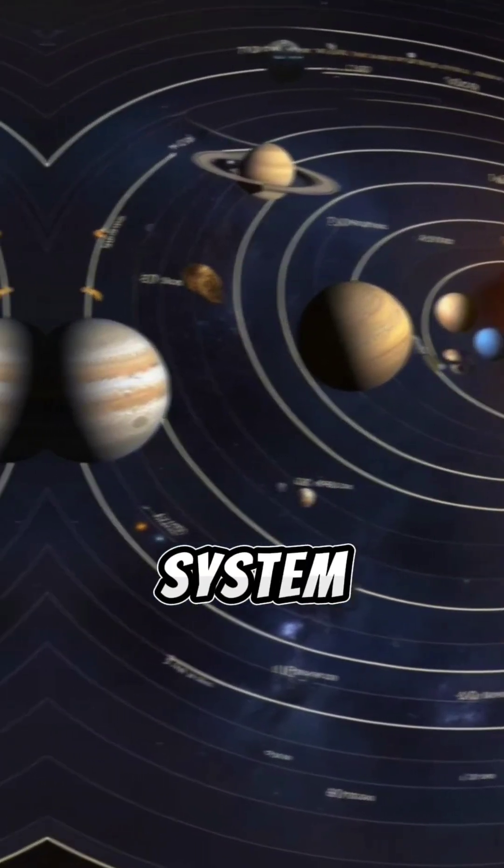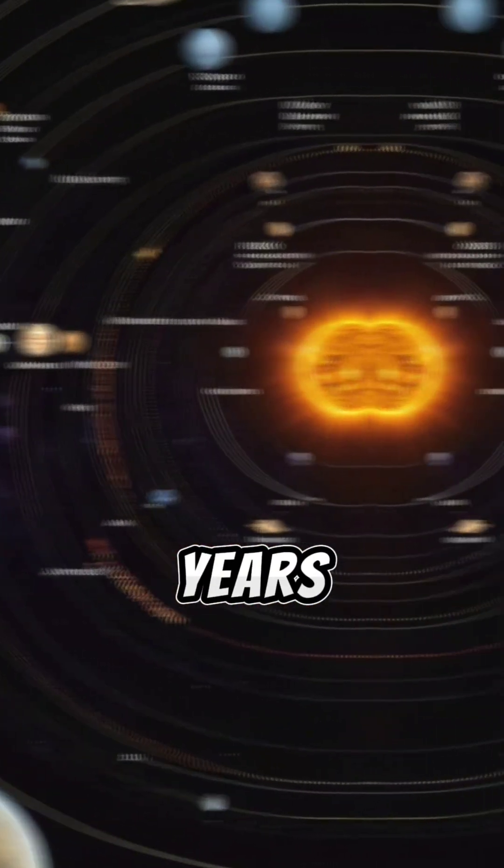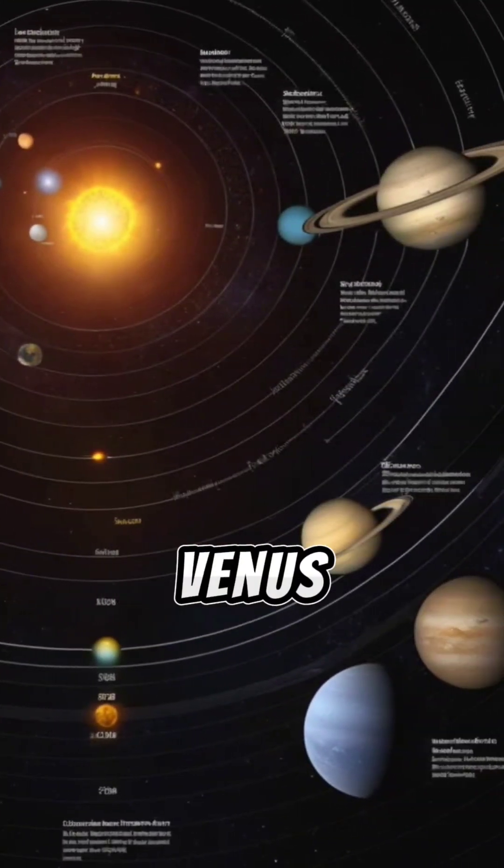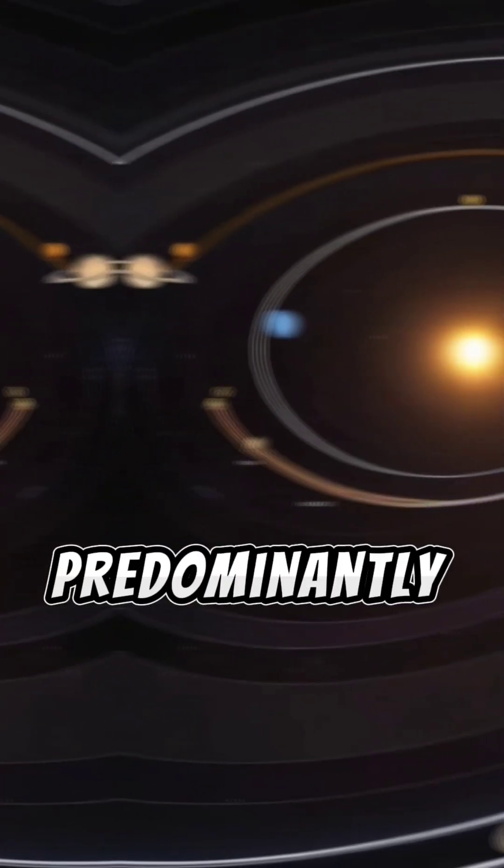4. The solar system has aged over 4.6 billion years. Inner planets, Mercury, Venus, Earth, and Mars, are predominantly rocky,